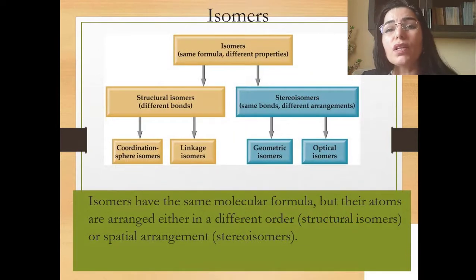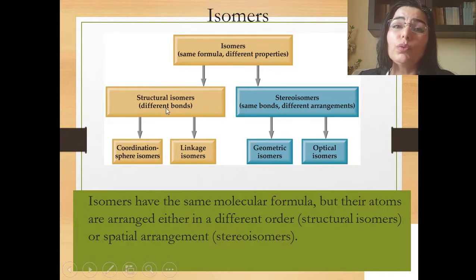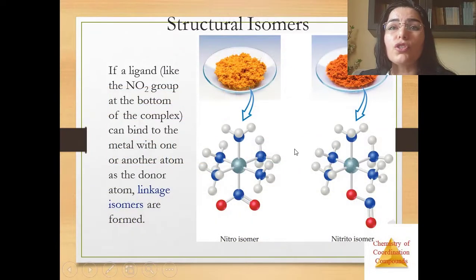Now about isomers. Isomers have the same molecular formula but their atoms are arranged either in a different order, structural isomers, or different spatial arrangement called stereoisomers. Structural isomers are divided into coordination sphere isomers and linkage isomers. Stereoisomers are divided into geometric isomers and optical isomers. If a ligand like the NO2 group can bind to the metal with one or another atom as a donor atom, linkage isomers are formed.